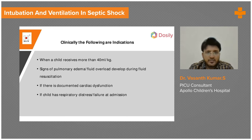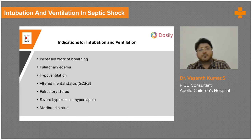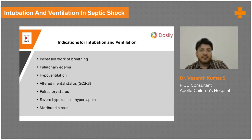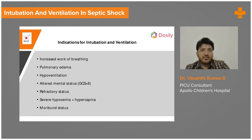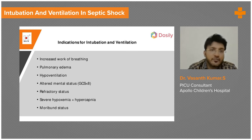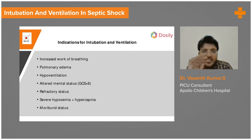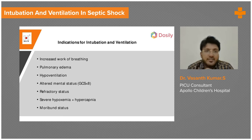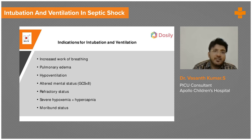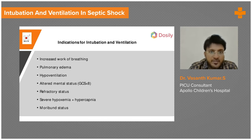The important point to remember is that normally the amount of blood flow going to the respiratory muscles and diaphragm is only 3 to 5%. But in septic shock, because of the increased work of breathing, the blood going to the respiratory organs can be close to 40 to 50%. So if you intubate and ventilate them and take care of the work of breathing, this blood flow can be diverted to important organs like the brain, kidney, and heart.